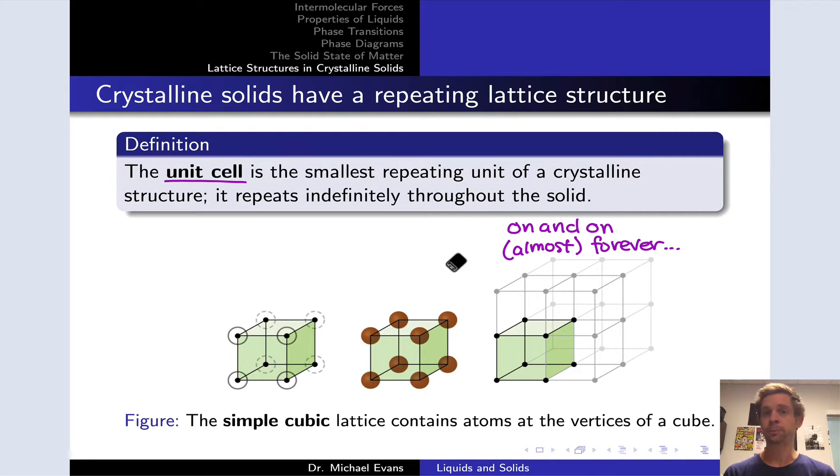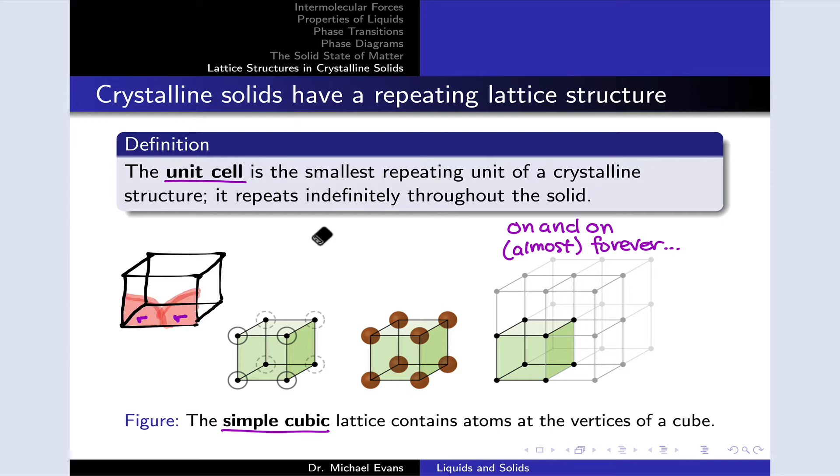We're going to start digging into the geometries here and appreciating how many atoms are contained within each unit cell, as well as some of the important dimensions found within each unit cell. This is going to allow us to calculate densities ultimately of a crystalline material, just by knowing essentially the density of the unit cell and scaling it up to a macroscopic level. In the simple cubic lattice with atoms at the vertices of a cube, we have each atom touching along each cube edge. That means that the length of a side of the unit cell cube is equal to twice the radii of the atoms involved. Two times the radius of that atom is equal to the edge length of the unit cell, L.